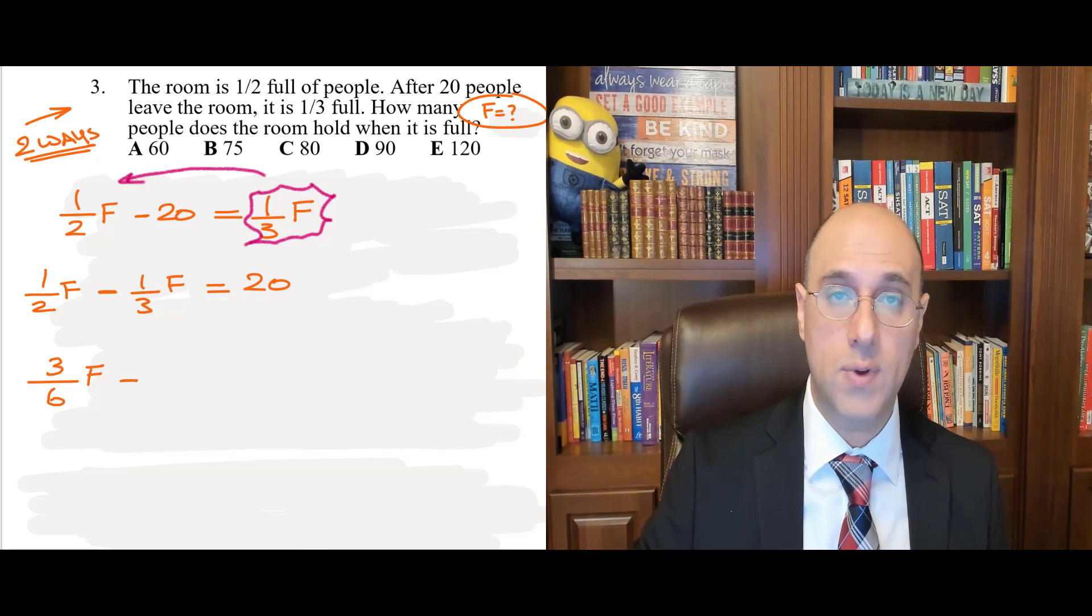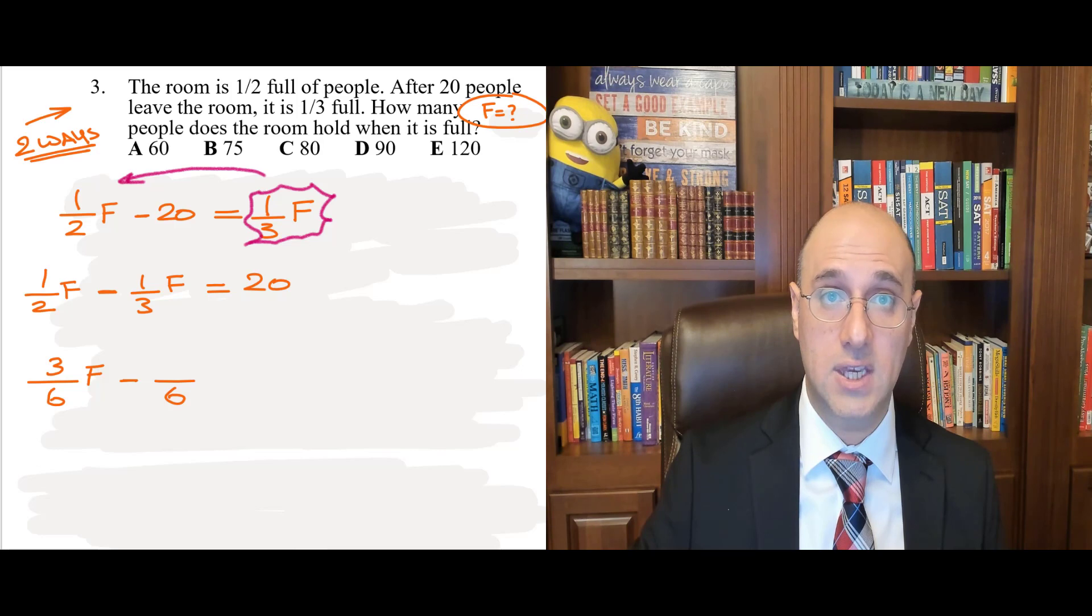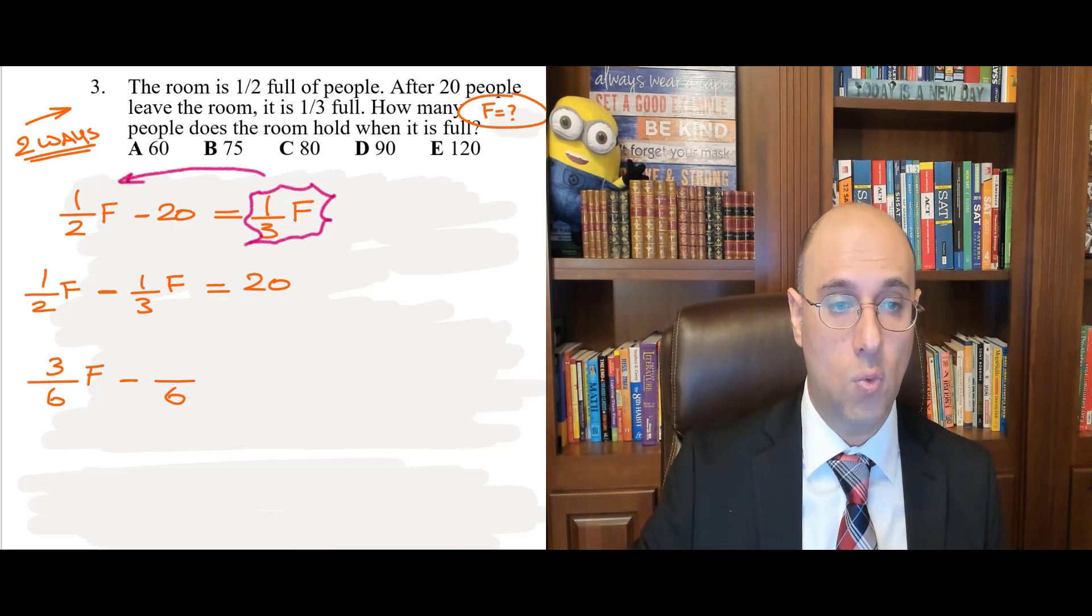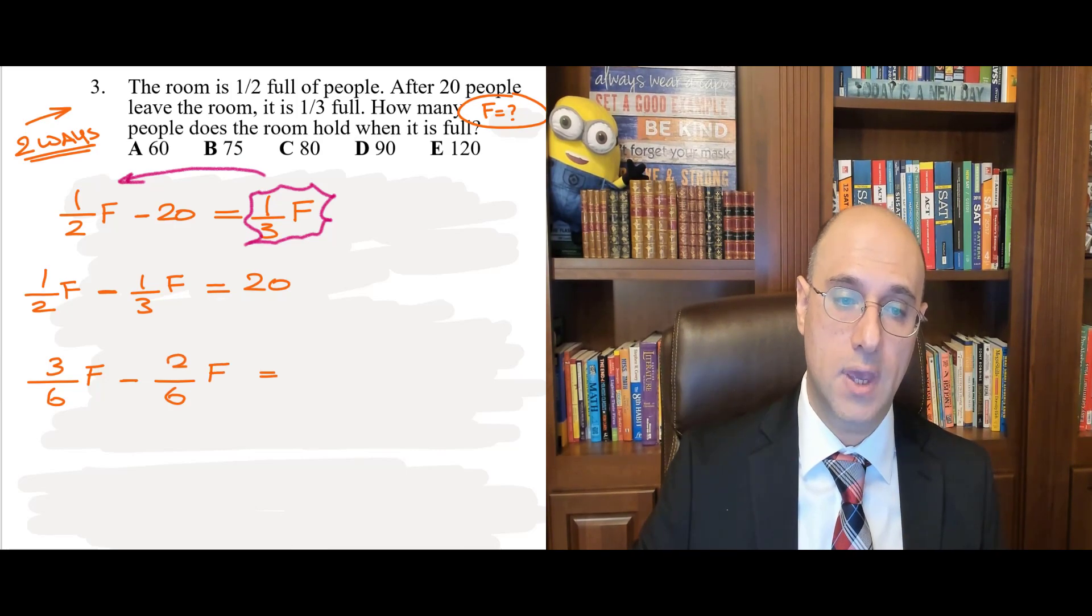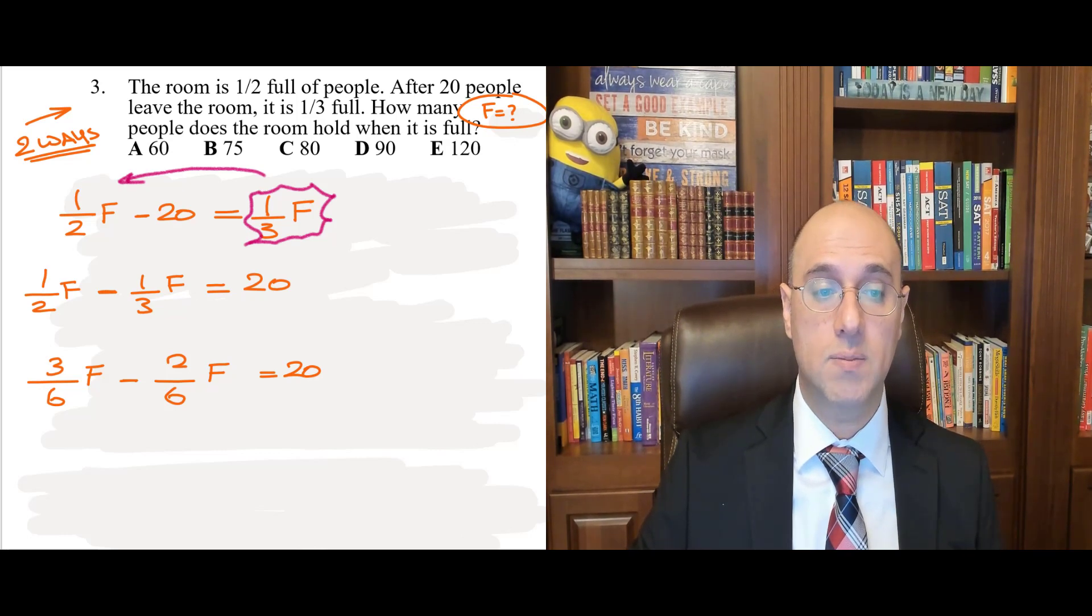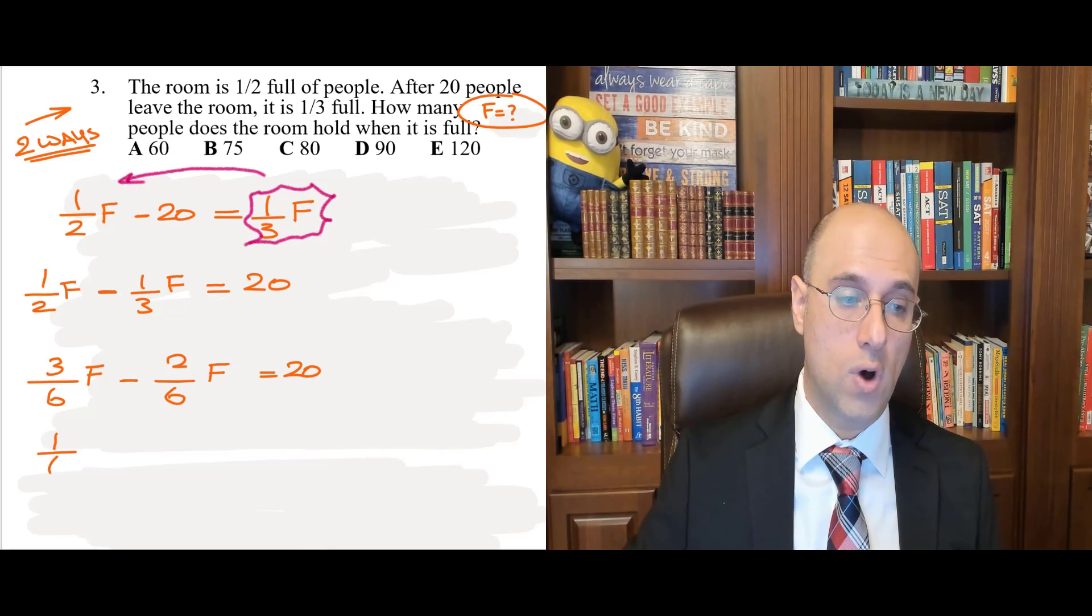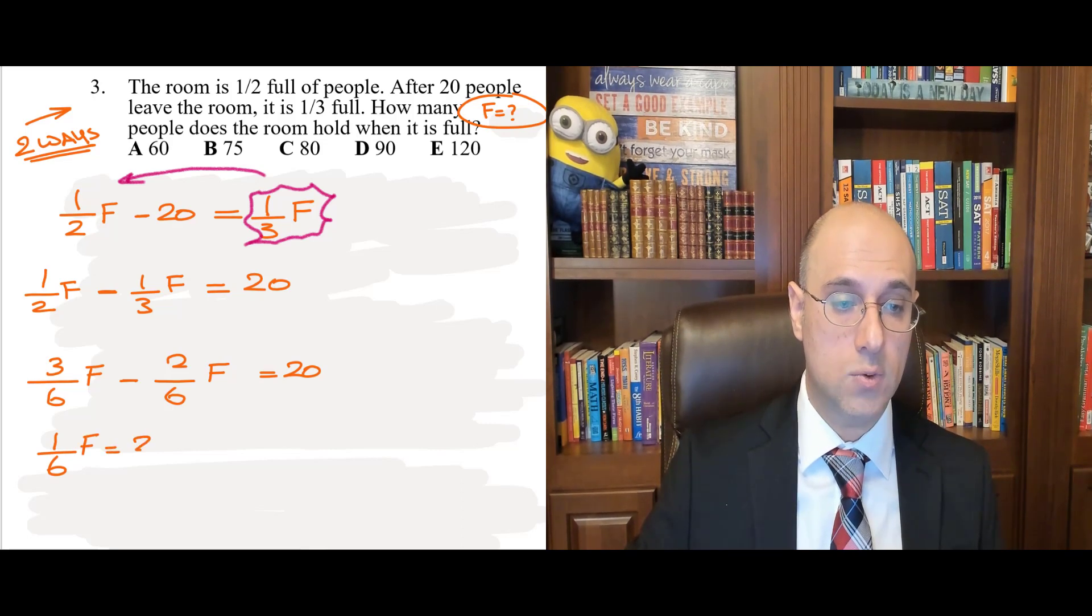Minus one over three F. Now, remember, I want to have the same denominator. So, I need to make this three into a six. So, 3 times two gives me six. So, I go one times two gives me two. So, two over six F equals 20. Now, subtract. Three over six minus two over six is one-sixth. One over six. One over six F equals positive 20.